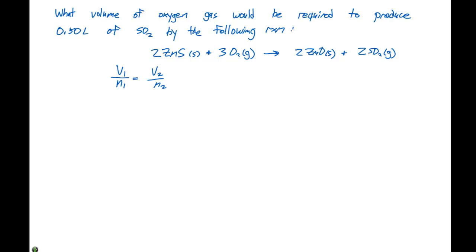Initially, we have 0.50 liters of SO2. And if we look at our balanced chemical equation here, we have two moles of SO2. So this is gonna be two moles, and that number two is gonna be an exact number.